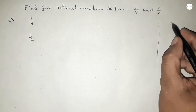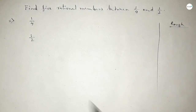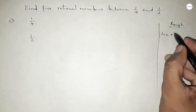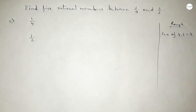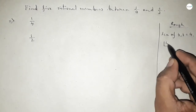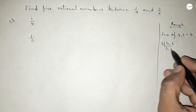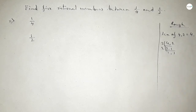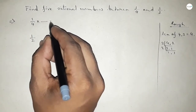Now, discussing some important calculation here. The denominators of both are not equal, so first we have to find out the LCM of 4 and 2. The LCM is 4. If you factorize: 4 divided by 2, again divided by 2, so their product is 4.